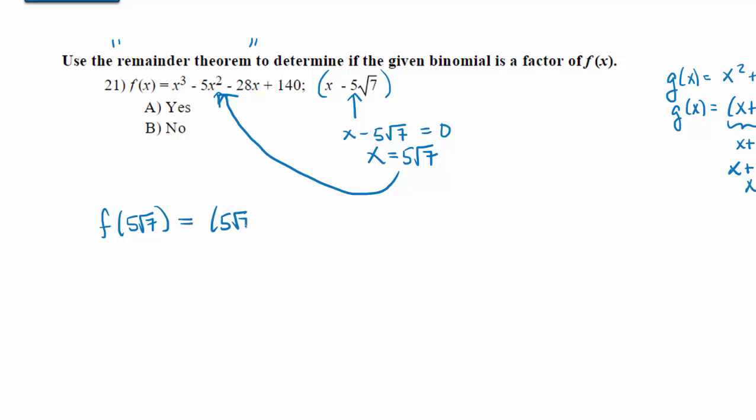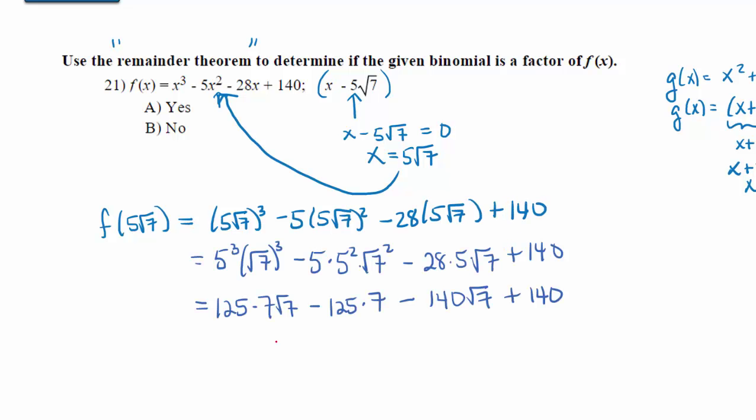It would be (5√7)³ minus 5 times (5√7)² minus 28(5√7) plus 140. This gives us quite a bit of arithmetic to do, but 5 times the square root of 7, when you cube it, you just cube each part. So we have 125 times 7√7, because √7 times √7 times √7 gives us 7√7.